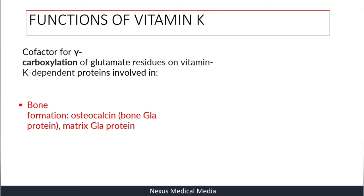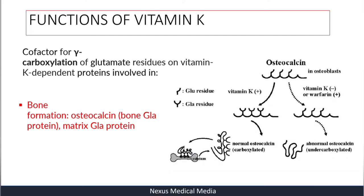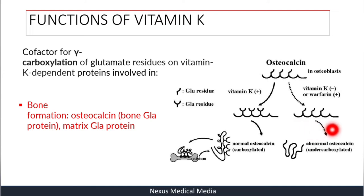The second function is in bone formation via osteocalcin, which is found in bone and produced by osteoblasts — the bone-forming cells. In the absence of Vitamin K, or in the presence of warfarin, there are abnormalities in osteocalcin and the proteins become under-carboxylated. When Vitamin K is present, osteocalcin is normal and proteins are well-carboxylated.